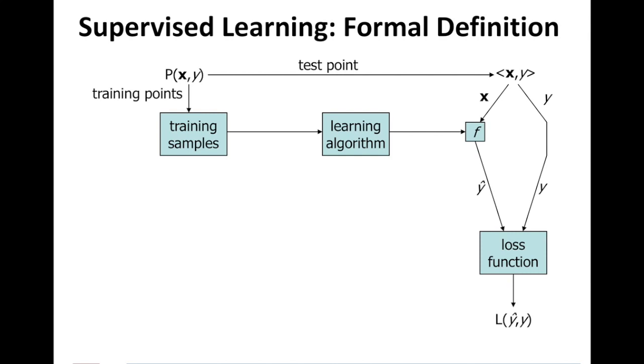L(y-hat, y) on the right measures your loss, and L could be any of these evaluation measures. That is used to improve the algorithm to do better and minimize the loss.